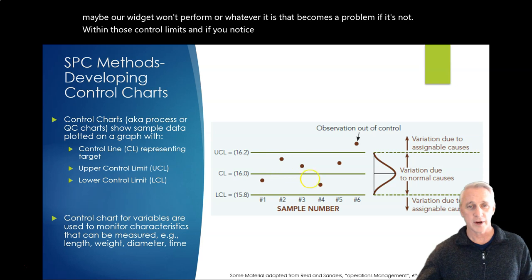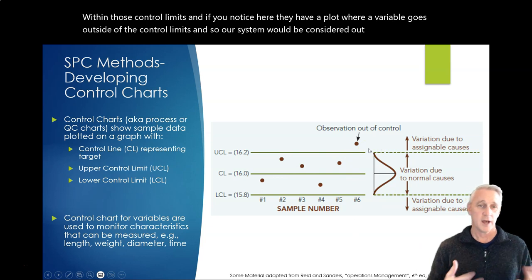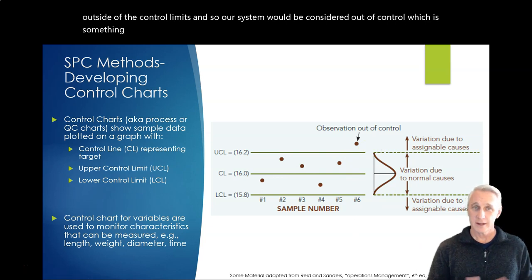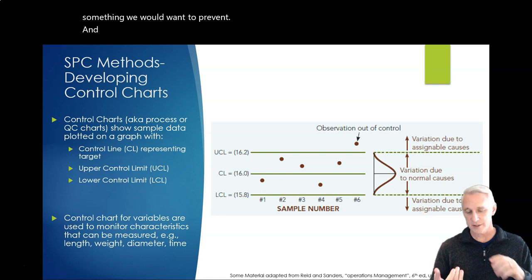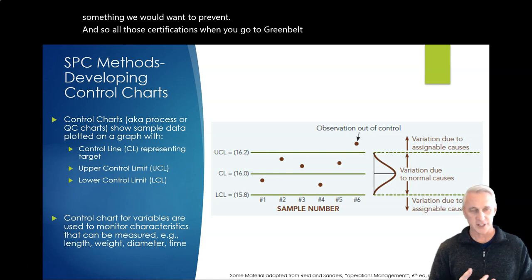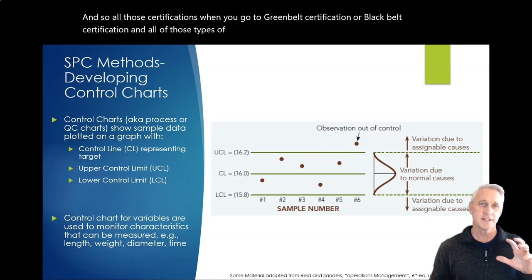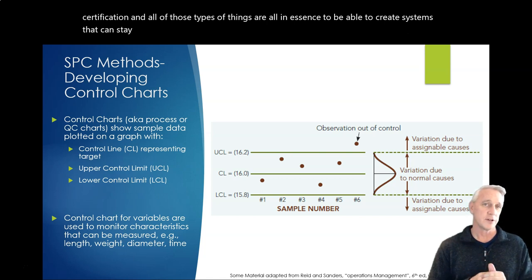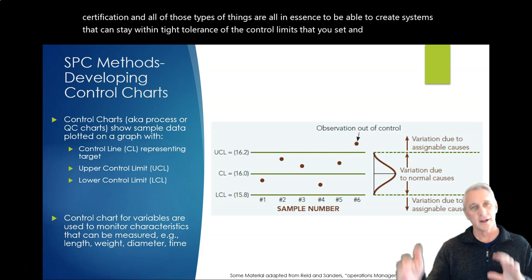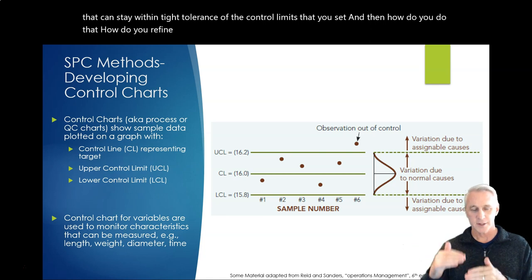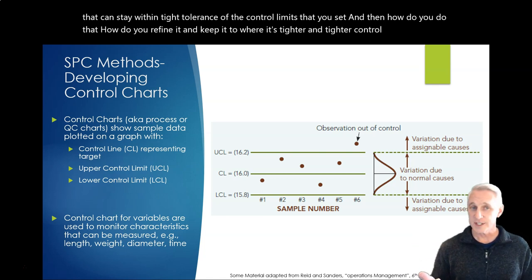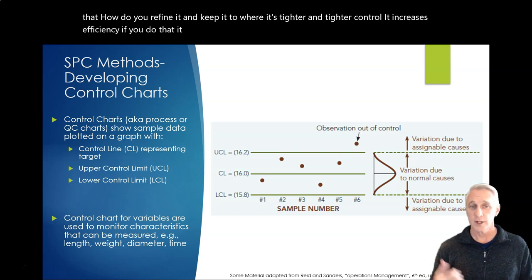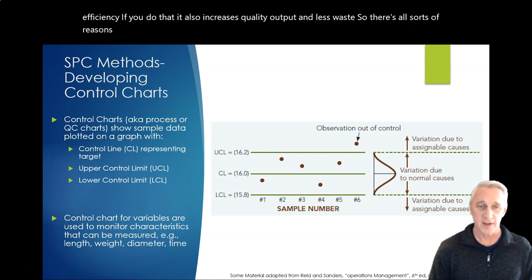Now, we also have control limits. We have an upper and a lower control limit, meaning that we're trying to target a certain number, but we want to see how far it goes up or down, but does it stay within those control limits? That's something that's very important to us because if we get outside of those control limits, maybe our widget won't perform or whatever it is that becomes a problem if it's not within those control limits. And if you notice here, they have a plot where a variable goes outside of the control limits, and so our system would be considered out of control, which is something we would want to prevent.